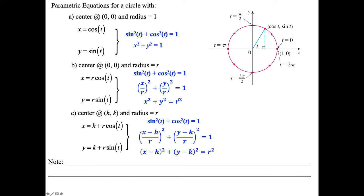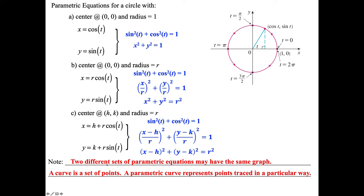Note: two different sets of parametric equations may have the same graph. A curve is a set of points; a parametric curve represents points traced in a particular way. That's why direction is important.